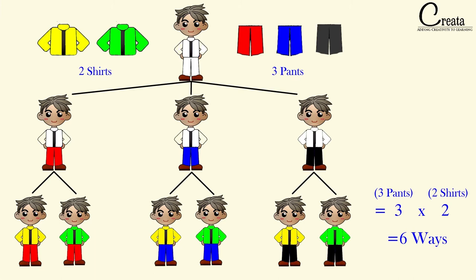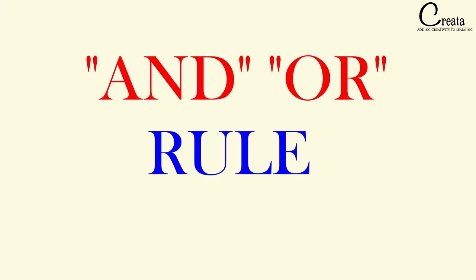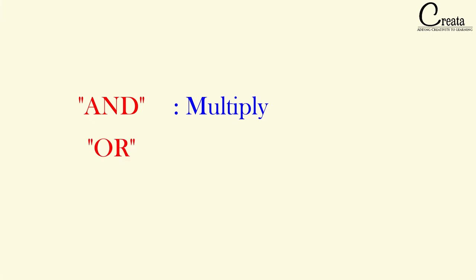But when the number of items or the number of choices are large, we will use the AND/OR rule. The fundamental is: wherever we get the word AND, we have to multiply. And wherever we get the word OR, we have to do addition. AND means multiplication; OR means addition. This fundamental you have to apply based on the logic given in the question. As you proceed with different questions, you will understand where to apply AND and where to apply OR.